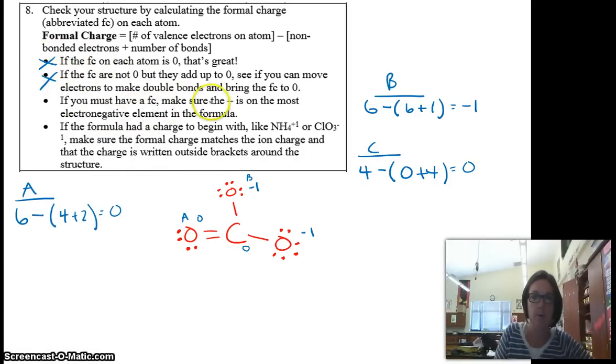We must have a formal charge. So we make sure that it's on the most electronegative element. Well, it's the external ones because it couldn't be in the middle. So then, if the formula had a charge to begin with, and it did. Carbonate was negative 2. We make sure that the formal charge matches the ion charge. Well, here's a negative 1 and here's a negative 1. That adds up to negative 2.